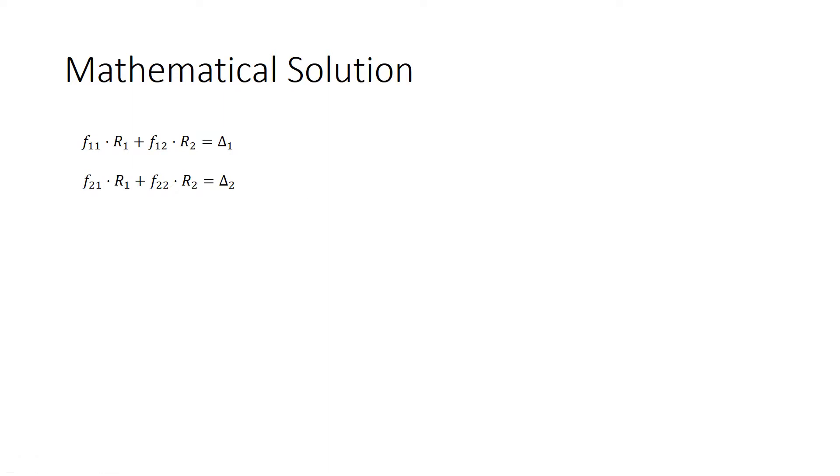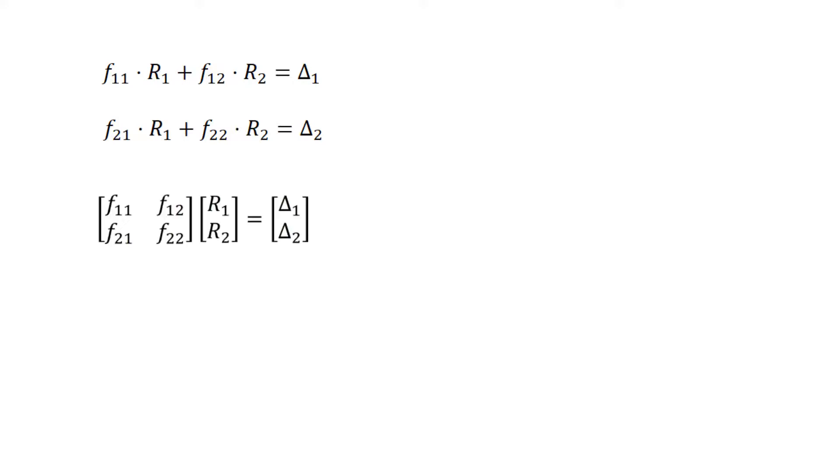Here I'm just recopying the equations, and what we're going to do is we're going to look at the system of equations and recast it in matrix form. Let's look at the first row, make sure we can recover the first row. The R1 multiplies the F1-1, the R2 multiplies the F1-2, those are added together, and that's equal to delta-1. Similar explanation for the second row. We'll call the matrix the flexibility matrix, the vector of R's, the vector of redundant forces, and there's no need to give a special name to the delta vector. We'll just call it delta.